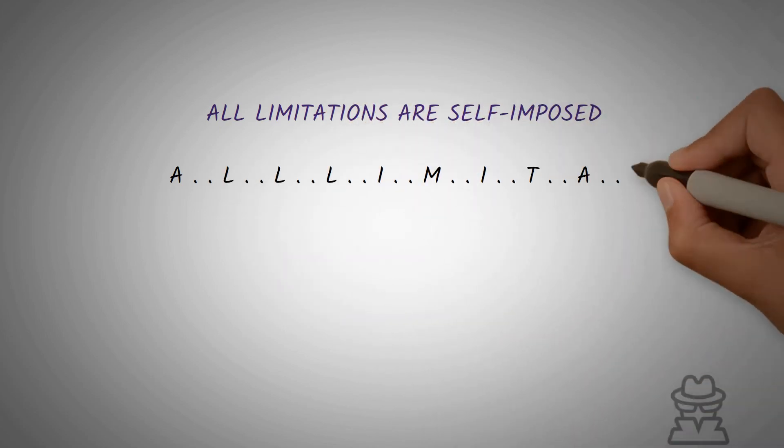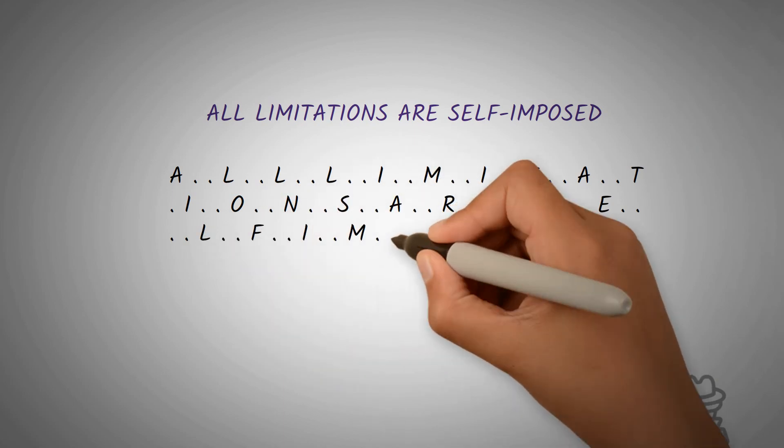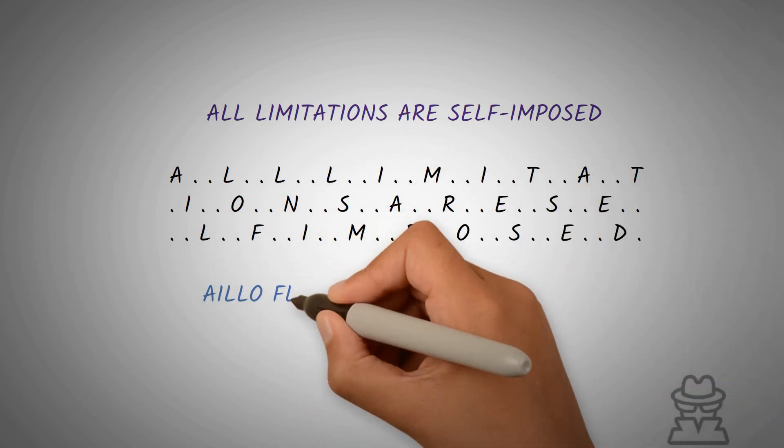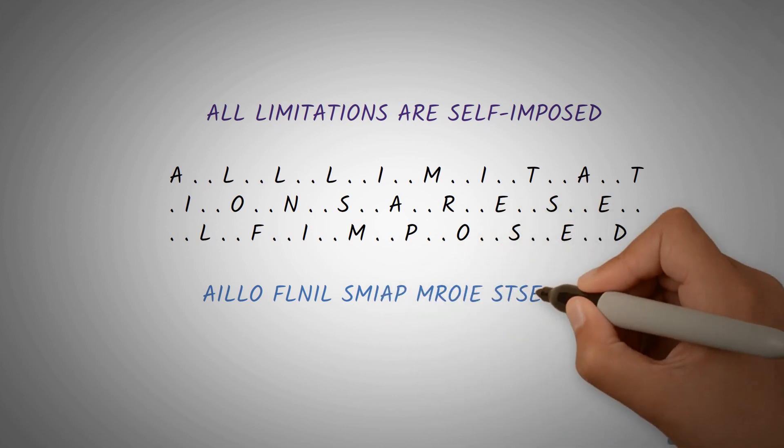For example, to encode the plaintext, all limitations are self-imposed, we would write something like this. Once that is done, we then copy the letters diagonally as so, grouping by five to further obscure our message.